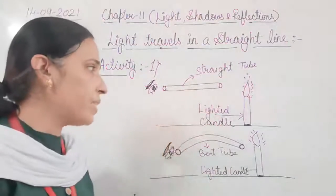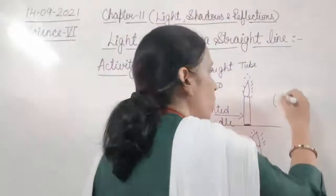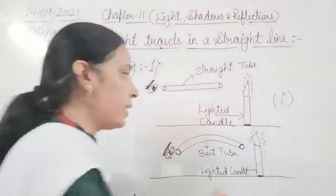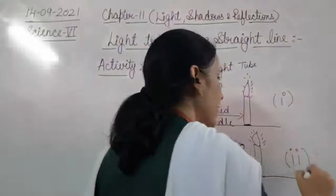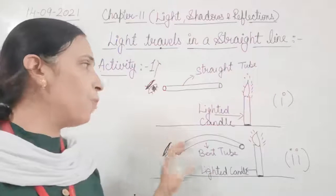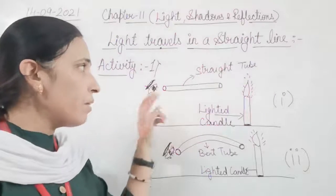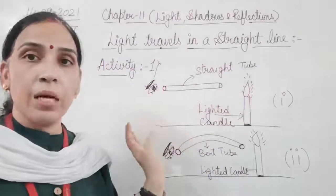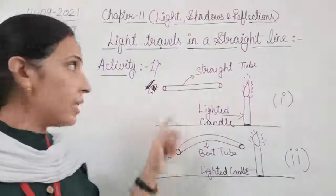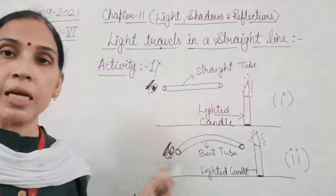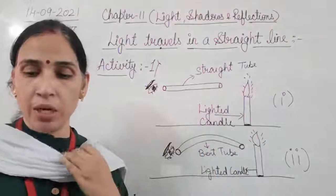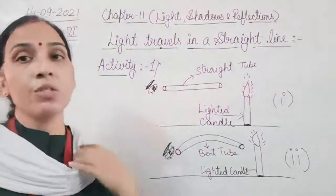So these two cases we have seen: in the first figure, we took a lighted candle and a straight rubber tube — with a straight tube, we can easily see the flame. In the second case, we took a lighted candle with a bent tube — with a bent tube, we won't be able to see this flame. This means that light travels in a straight line. So this activity we have done to prove that yes, light travels in a straight line.